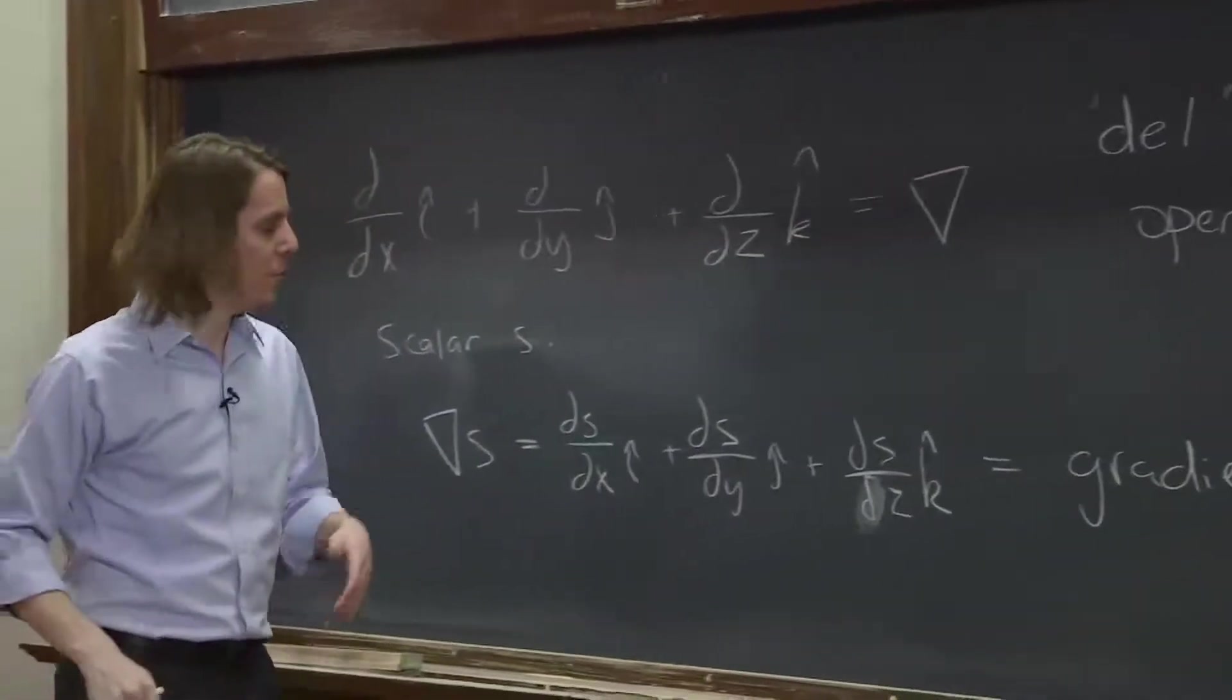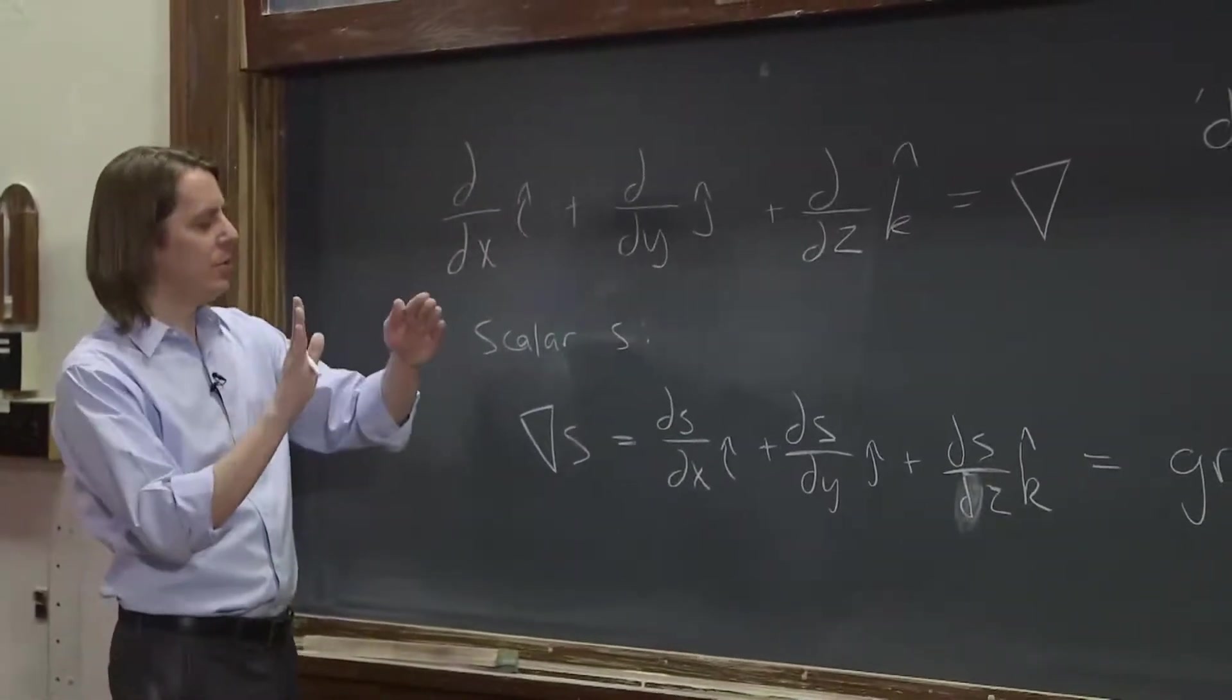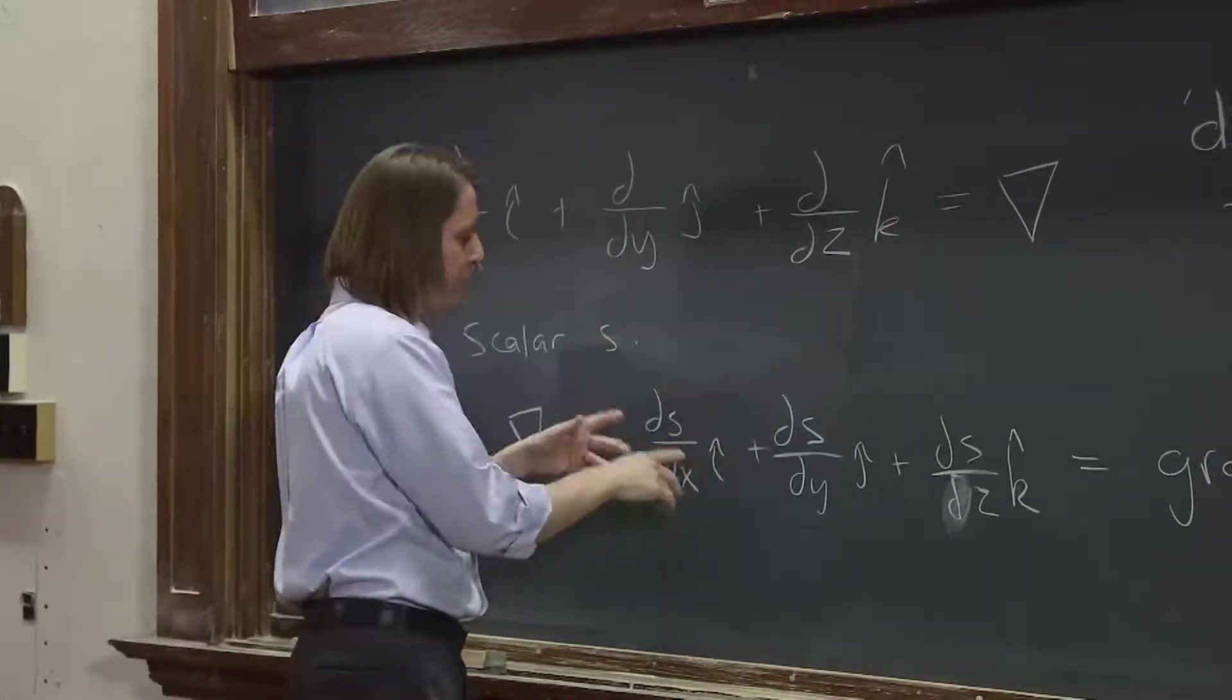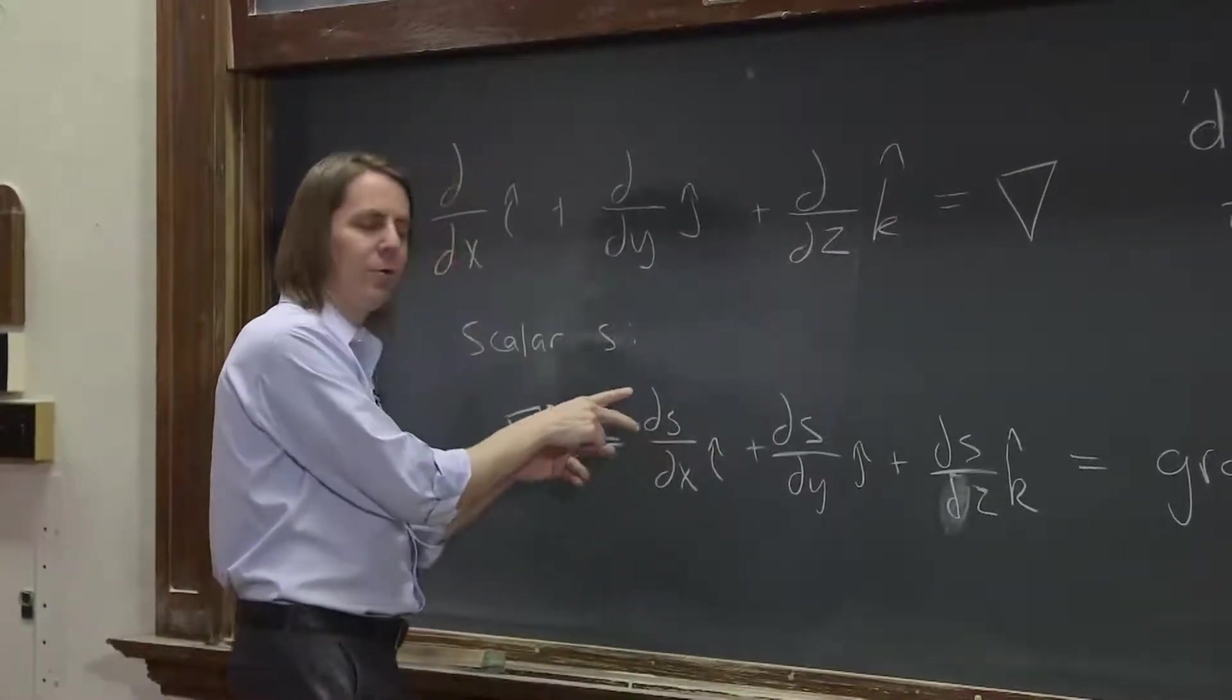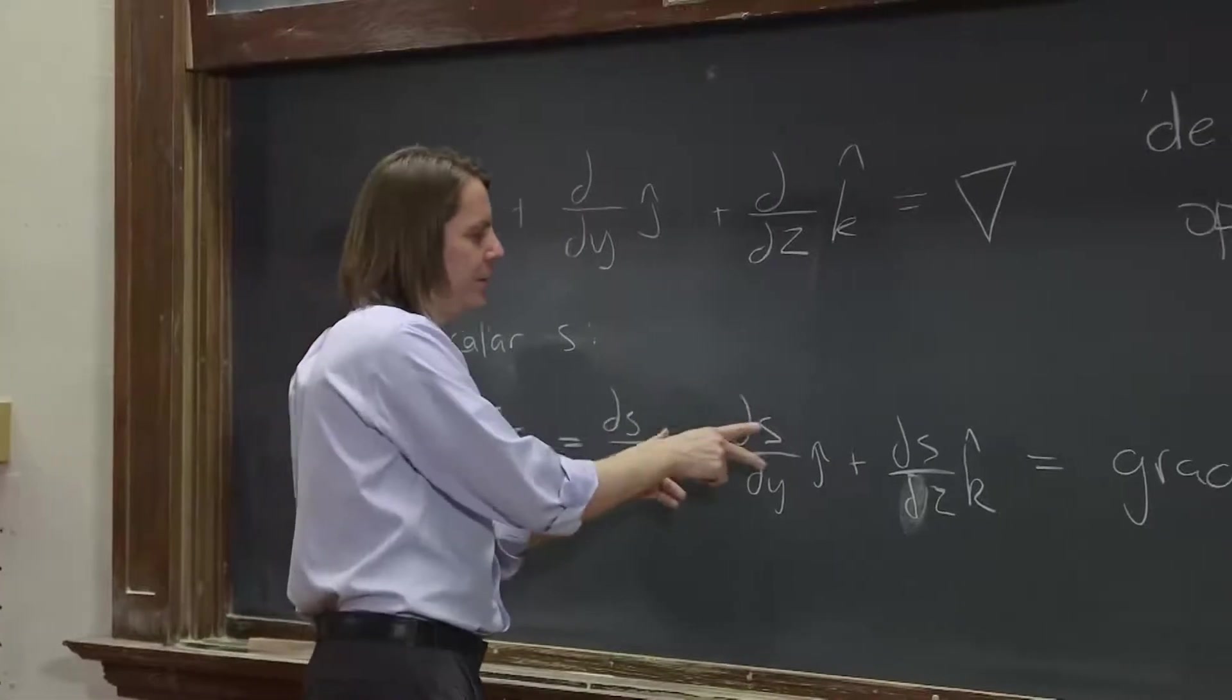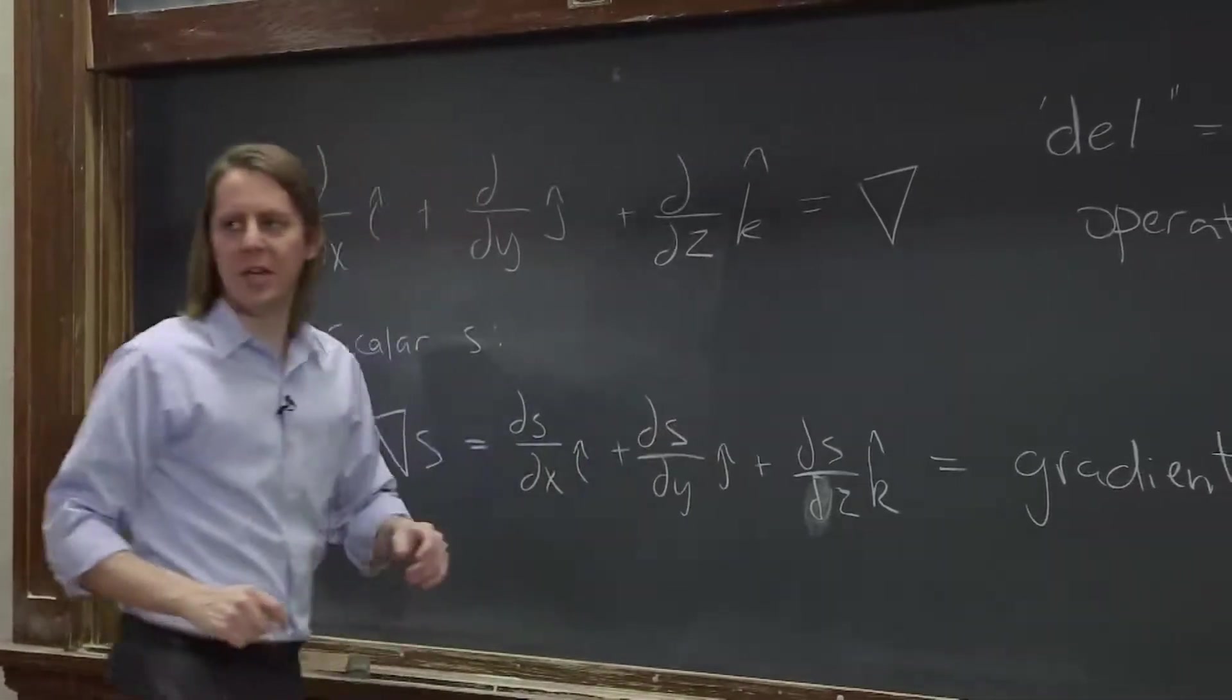Because like we just showed, if you imagine you're going in some unit direction, in these different directions, multiplying by dS/dx gets you the change, the little bit of the change in one direction, a little bit of the change in the other, a little bit of the change in the other.